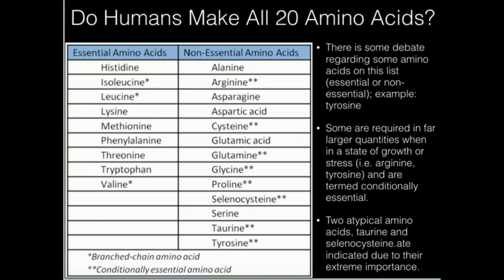Taurine is not well understood, but we do know if you don't have it, you've got a big problem. We do know the biosynthesis of taurine. Not listed here, there are a lot of other amino acids we'll look at, including beta alanine and GABA. We're going to look at some of the other ones and see their biosynthesis and function too — it's actually a pretty interesting topic.